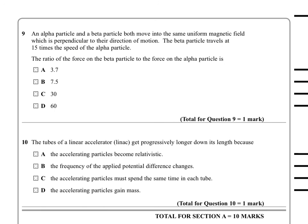Question 9. An alpha particle and a beta particle both move into the same uniform magnetic field which is perpendicular to the direction of motion. The beta particle travels at 15 times the speed of the alpha particle. The ratio of the force on the beta particle to the force on the alpha particle is one of these values. So we just remember that alpha particles are double positive because they've got two protons in them, and beta particles are single negative.